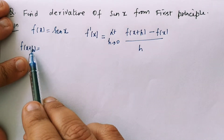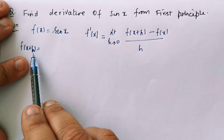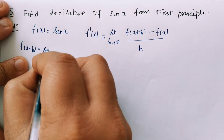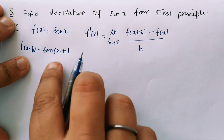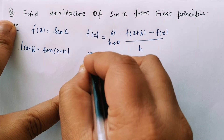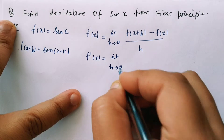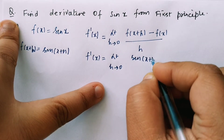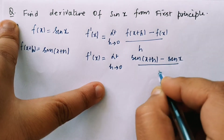So how do we get f(x+h)? Since f(x) = sin x, and we replace x with x+h, f(x+h) will be sin(x+h). I will use these two in this formula. Therefore f'(x) = limit h tends to 0 of sin(x+h) minus sin x divided by h.